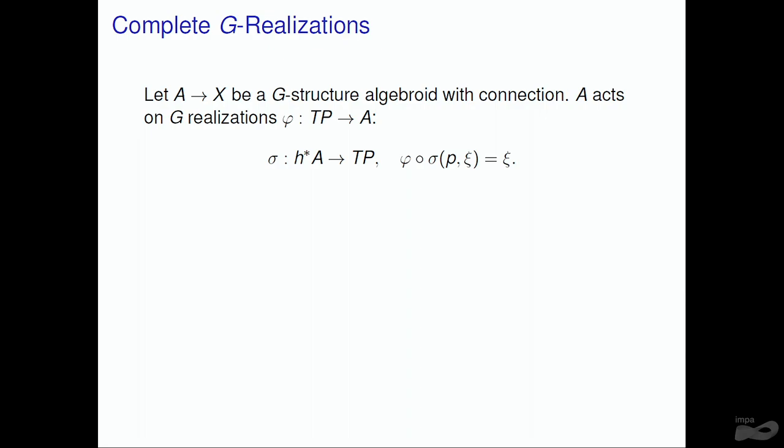Now I'm going to tell you about global solutions. This settles the local solutions: for every point on the base X, there exists a local solution, and locally these are all of the solutions — they are universal, or at least versal. Now I want to tell you about the global problem. To understand global solutions, I'll tell you what I mean by a complete G-realization; these are what 'global' means.